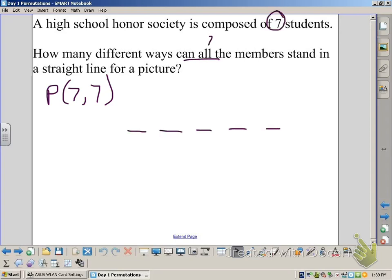We have seven blanks, and we're trying to put all seven students into them. So the first blank could have seven, and then on down the line, multiplying leaves us with an answer of 5040.